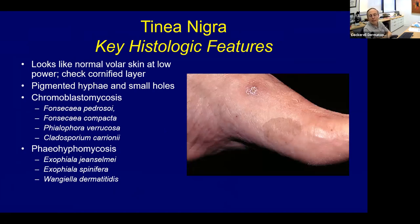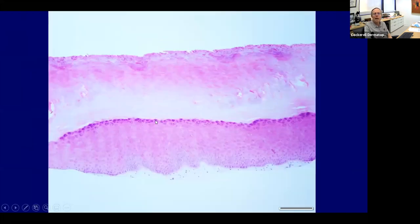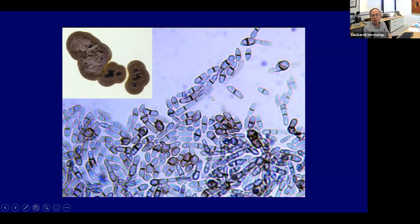Tinea nigra clinically often looks like melanoma, so they might show this with melanoma as a differential diagnosis. It's caused by a dematiaceous fungal infection — the same kinds of organisms that cause chromoblastomycosis and phaeohyphomycosis. When you biopsy tinea nigra, there's really no inflammation. You look in the cornified layer and see these pigmented hyphae. On culture, you get dark brown colonies and pigmented spores.